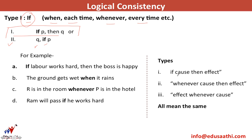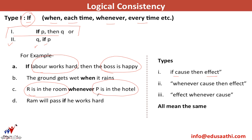The type of question is 'if cause then effect' — for example, 'if labor works hard' is the cause and 'the boss is happy' is the effect — or 'whenever cause then effect.' We can also have 'effect whenever cause,' such as 'R is in the room whenever P is in the hotel,' where R being in the room is the effect and P being in the hotel is the cause. All of them mean the same. Let's look at how to solve these questions.